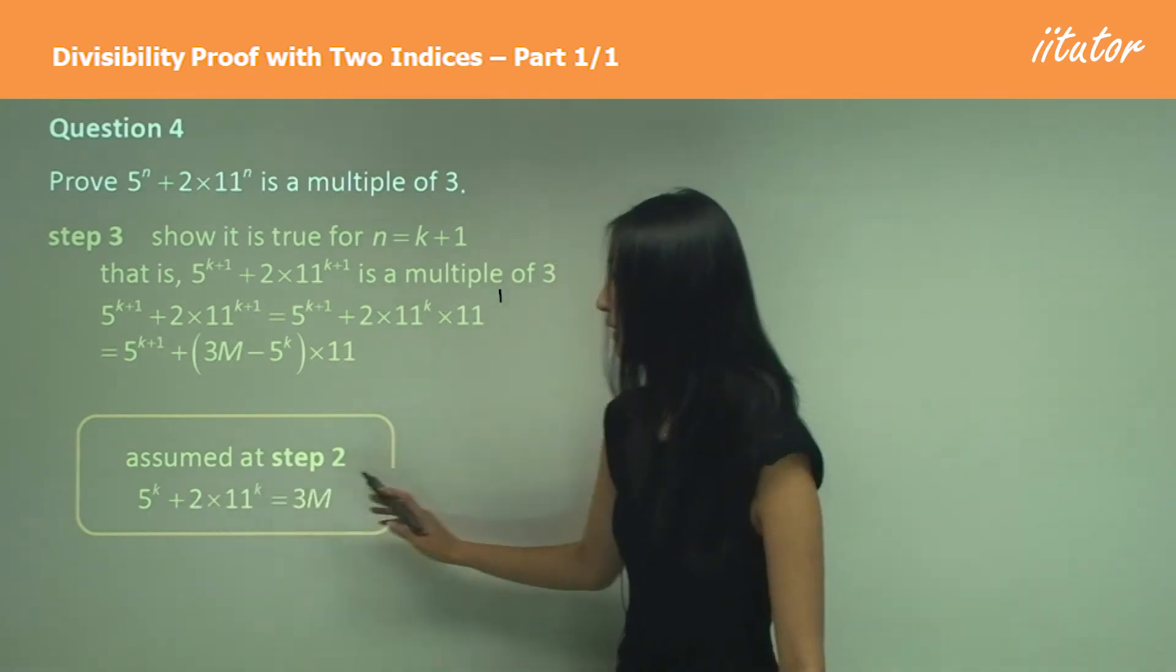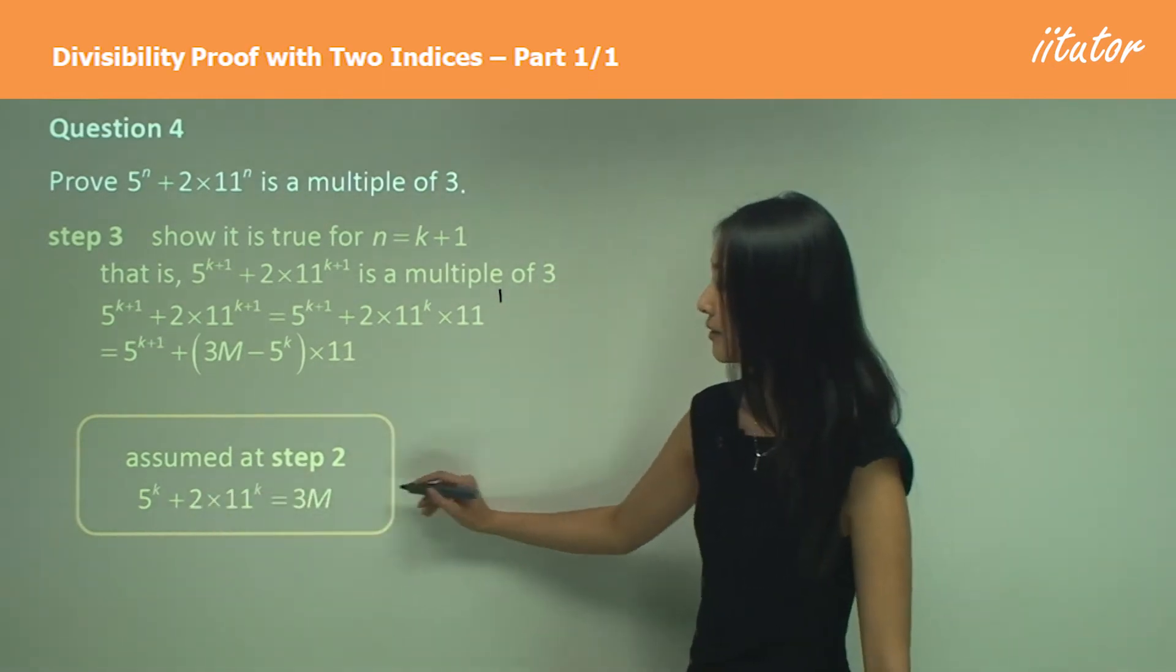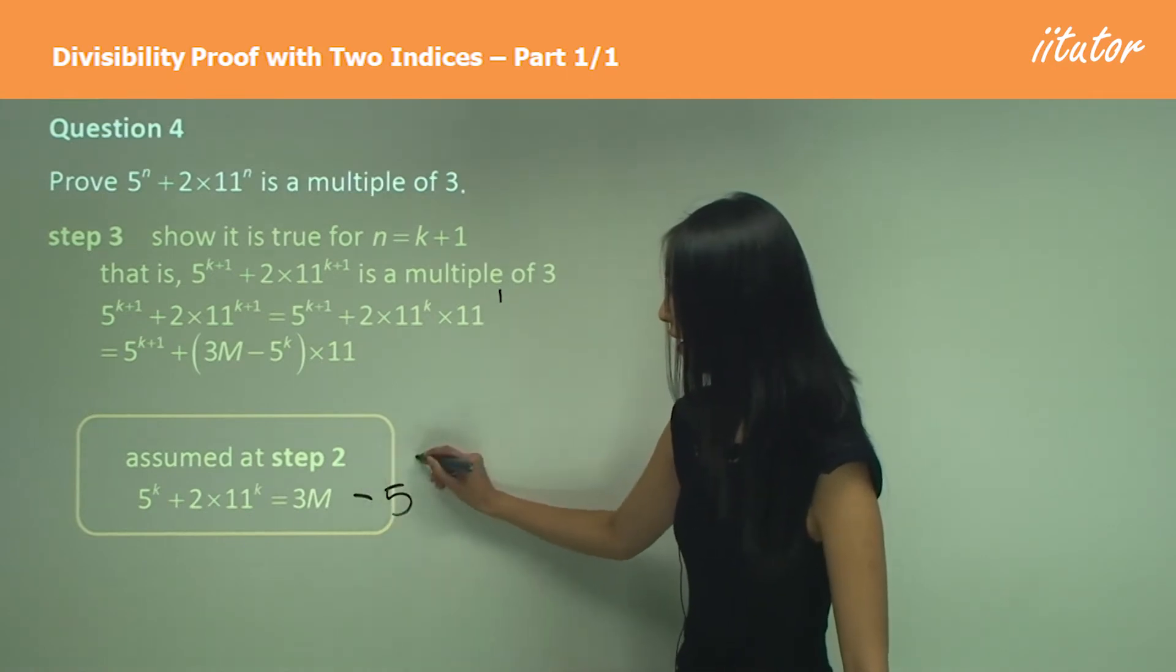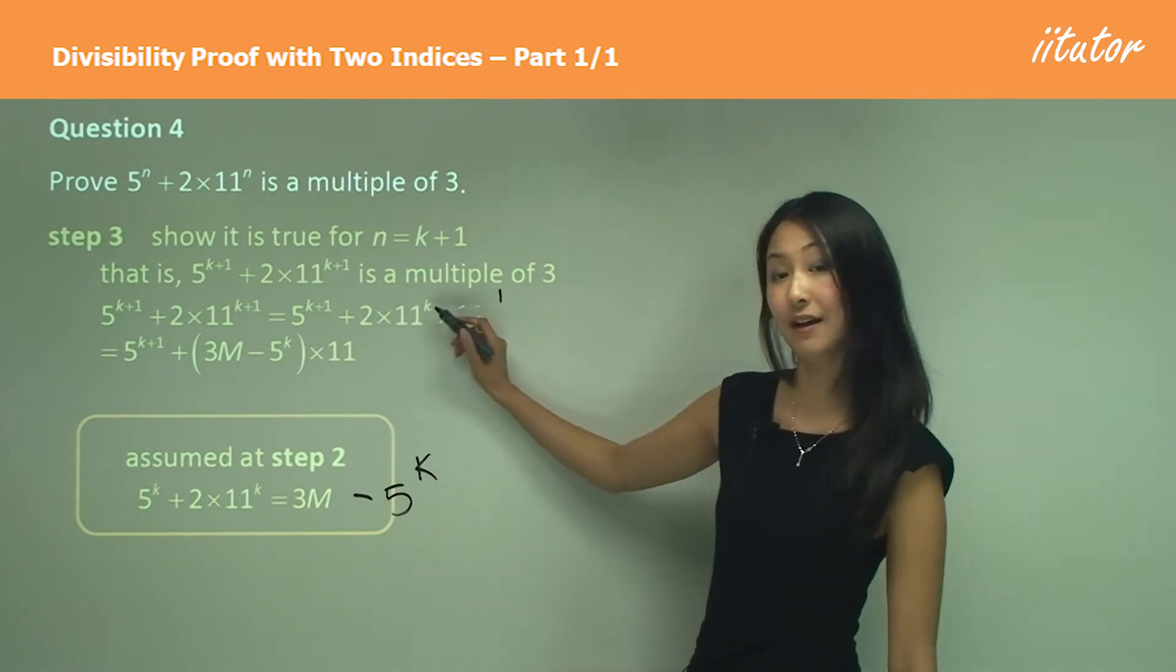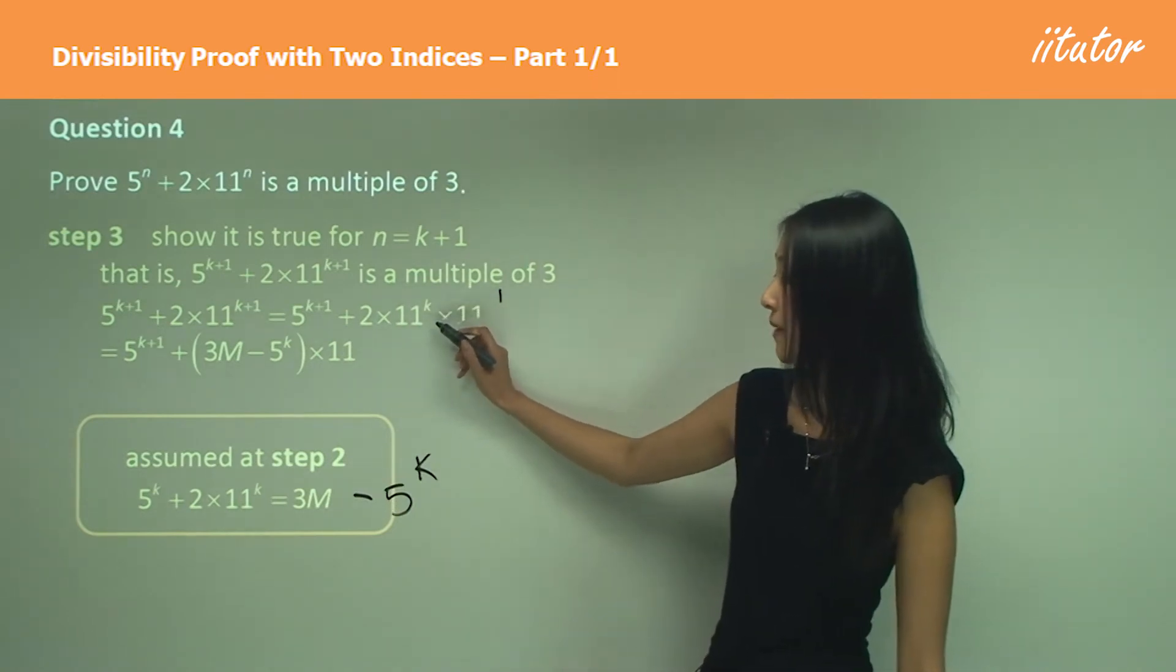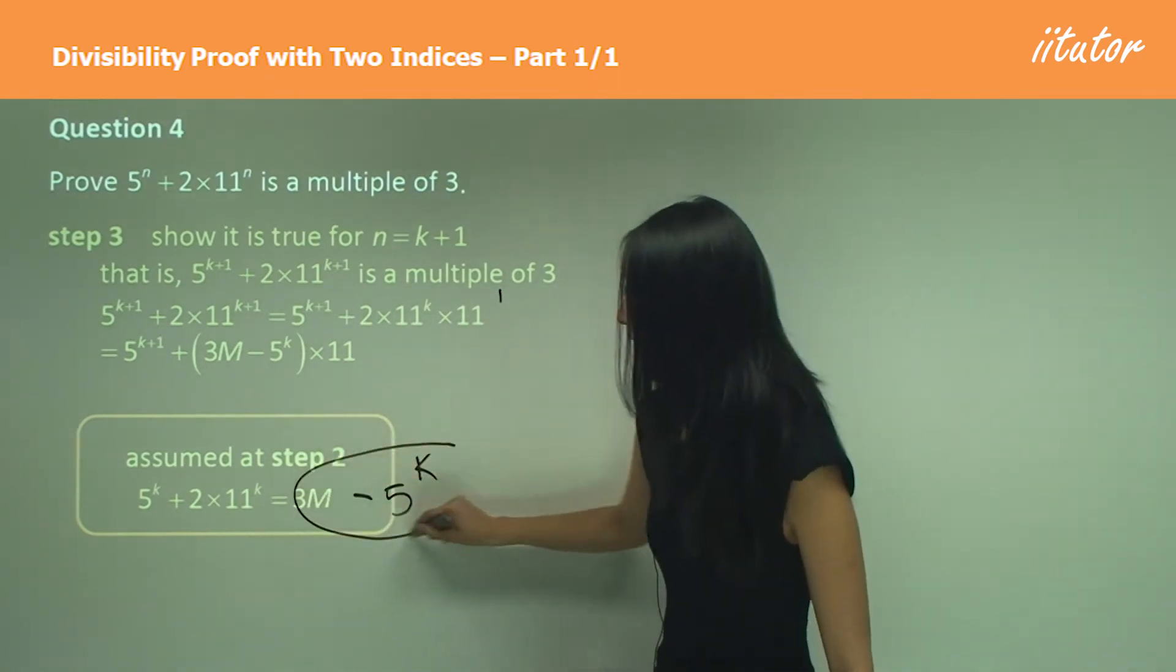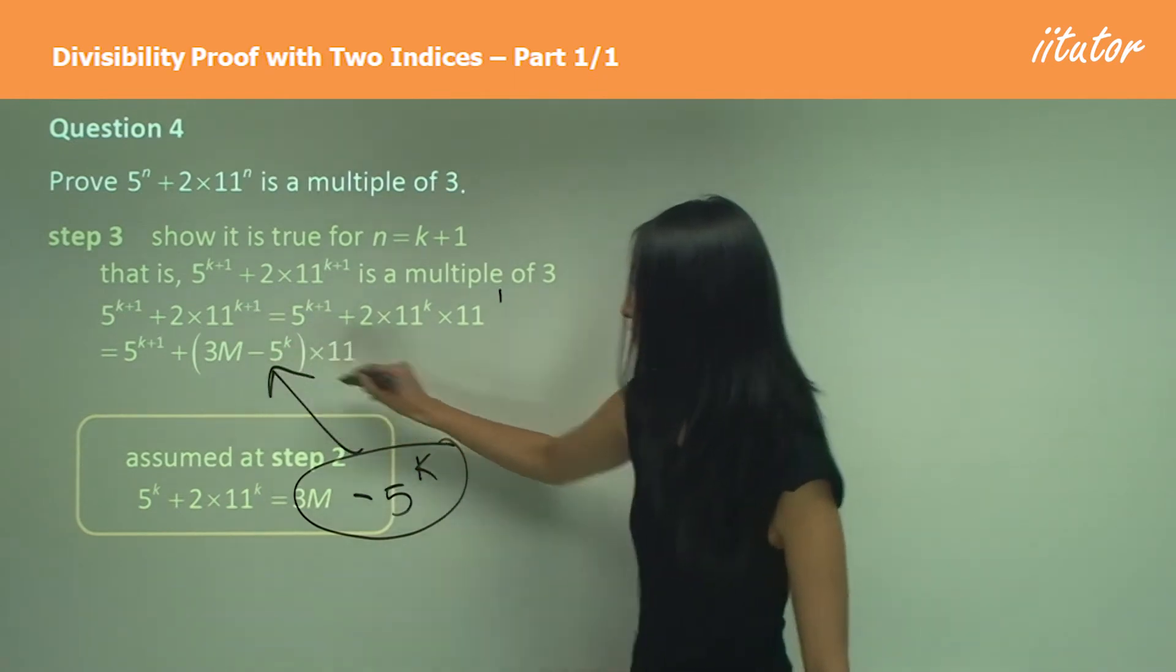So we can subtract 5^k across, and you can see that 2 times 11 to the power of k, which is what we have here, I have just substituted for that.